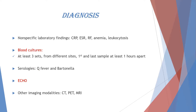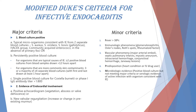Diagnosis of infective endocarditis requires strict criteria. There are non-specific lab findings like CRP, ESR, anemia, and leukocytosis, but the two most important diagnostic tools are blood cultures and echocardiogram. The modified Duke criteria include major and minor criteria. From the major criteria, blood culture positivity is the primary one, and the second is evidence of endocardial involvement — positive echocardiogram or new valve regurgitation on echo.